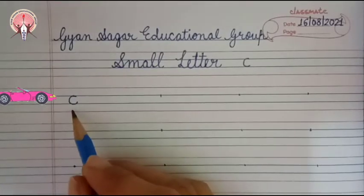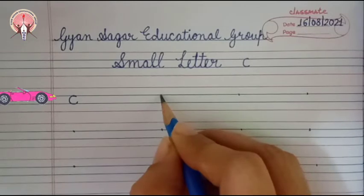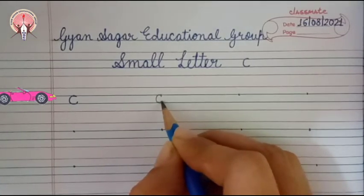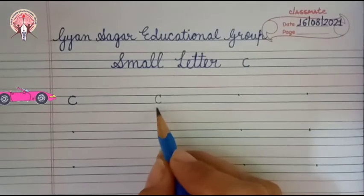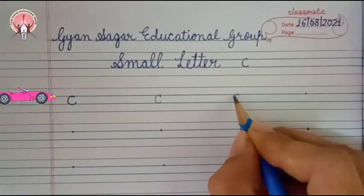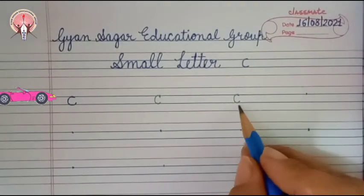How to write C? Put your pencil on the dot. Come down with the left curve. C. Come down with the left curve. C.